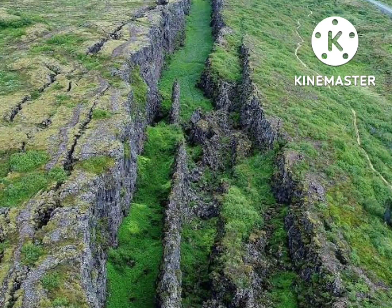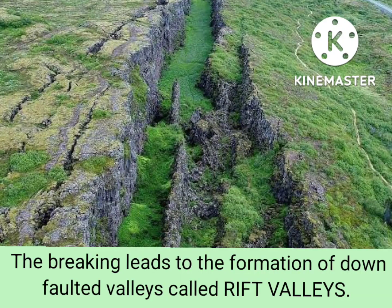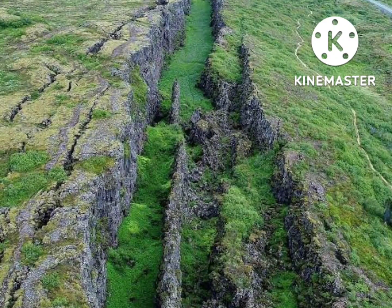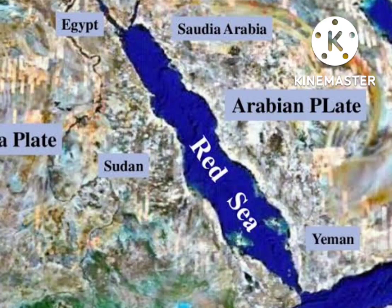When a spreading center develops within a continent, the crust may break into several segments. The breaking leads to the formation of down-faulted valleys called rift valleys. It is also associated with the rising of hot materials from the mantle. The rift valley increases its length and depth as the spreading continues. At this point, the valley develops into a linear sea, similar to the Red Sea today.